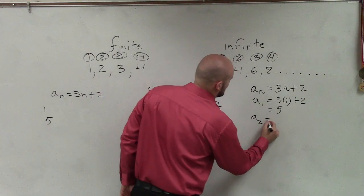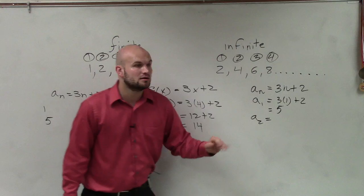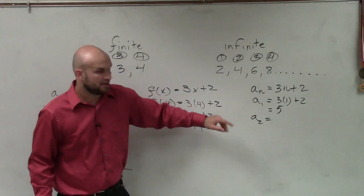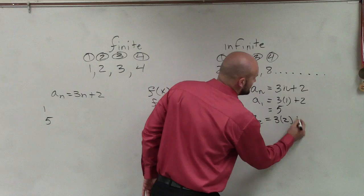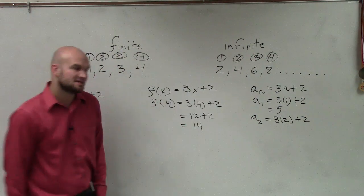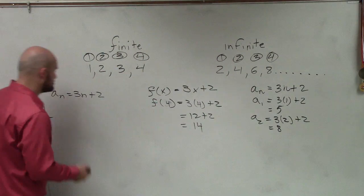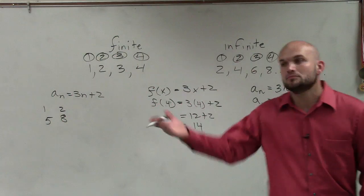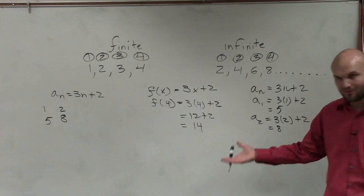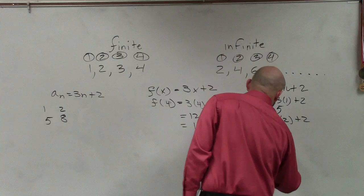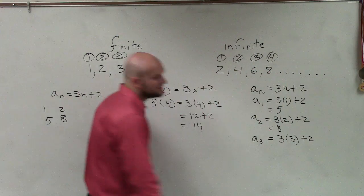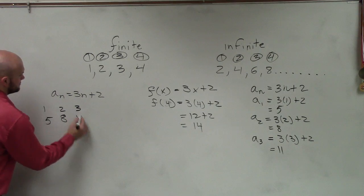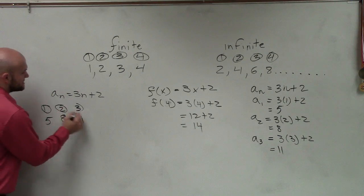Let's find the second term — you just plug in a 2: 3 times 2 plus 2. Three times 2 is 6, and 6 plus 2 equals 8. I'm trying to relate this back to functions, but now what we're doing is setting up a sequence of them. Then if you need to find the next one, plug in 3: 3 times 3 is 9, and 9 plus 2 equals 11.